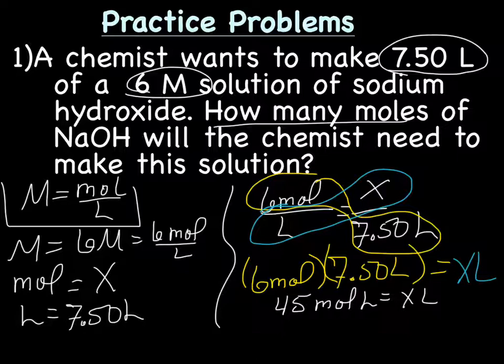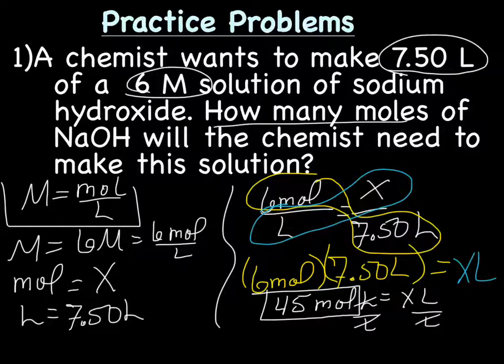I got 45 mol liters equals X liters. Now we need to solve for X, and so what we'll do is divide both sides by liters, and we end up with 45 mols. X equals 45 mols. Last step is to check sig figs. So if we go back to our list here, we have one sig fig and three sig figs, so we're going to have one sig fig, which means we're only going to keep the four. So five is, five or bigger, so we're going to round up to five, and then because we're dropping a number, the five, before a decimal, we need to add a placeholder. So our final answer is going to be 50 mols.